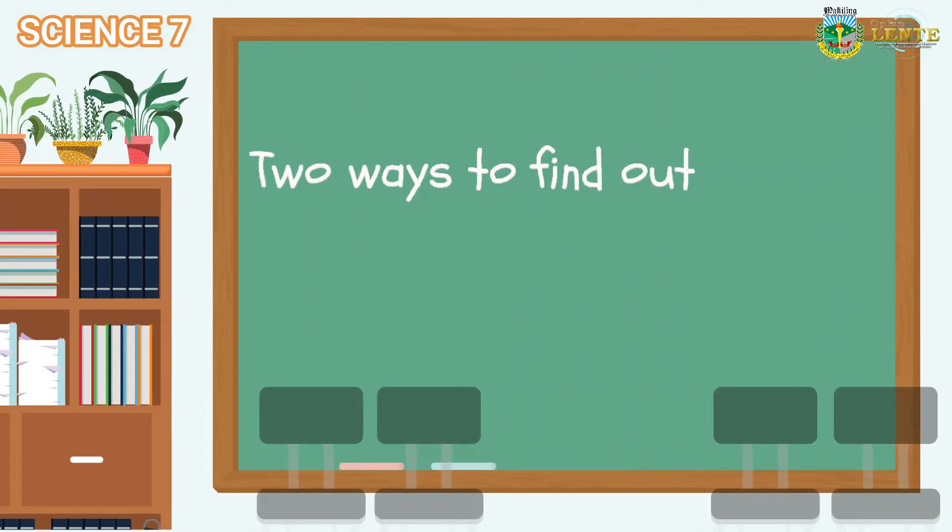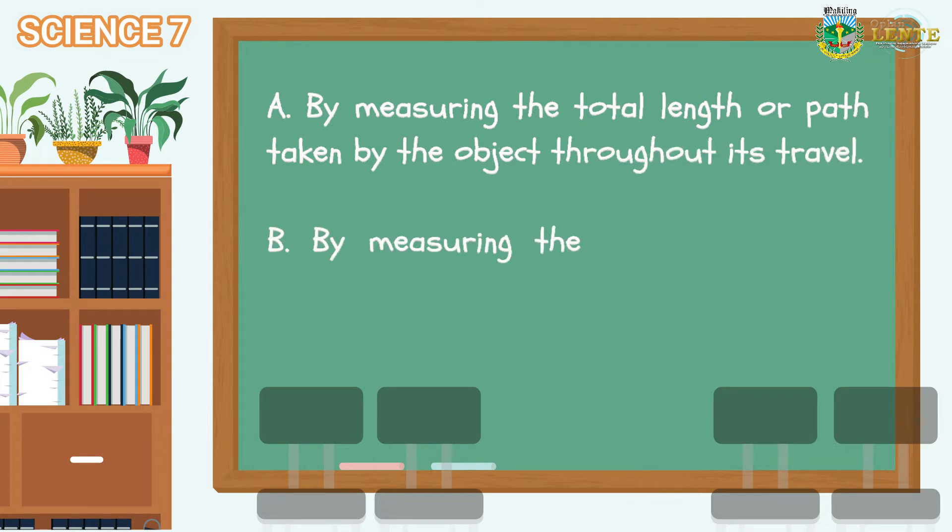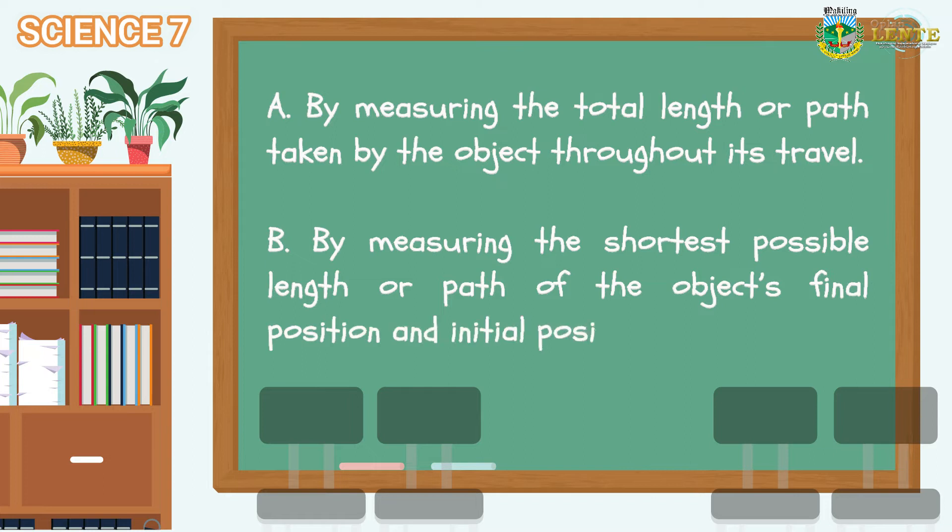We can identify how far the object travels in two ways. First, by measuring the total length or path taken by the object throughout its travel. Second, by measuring the shortest possible length or path of the object's final position and initial position.